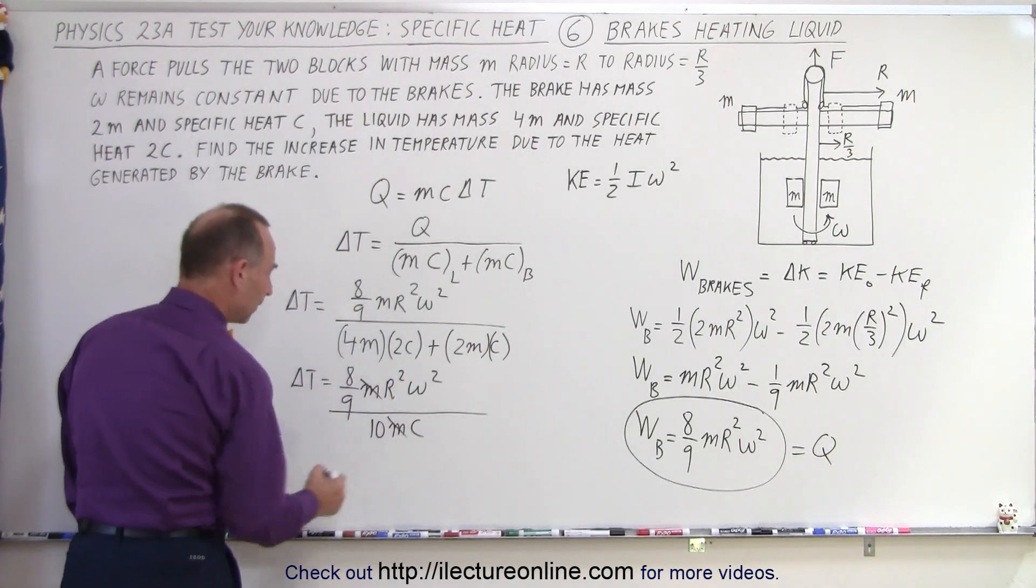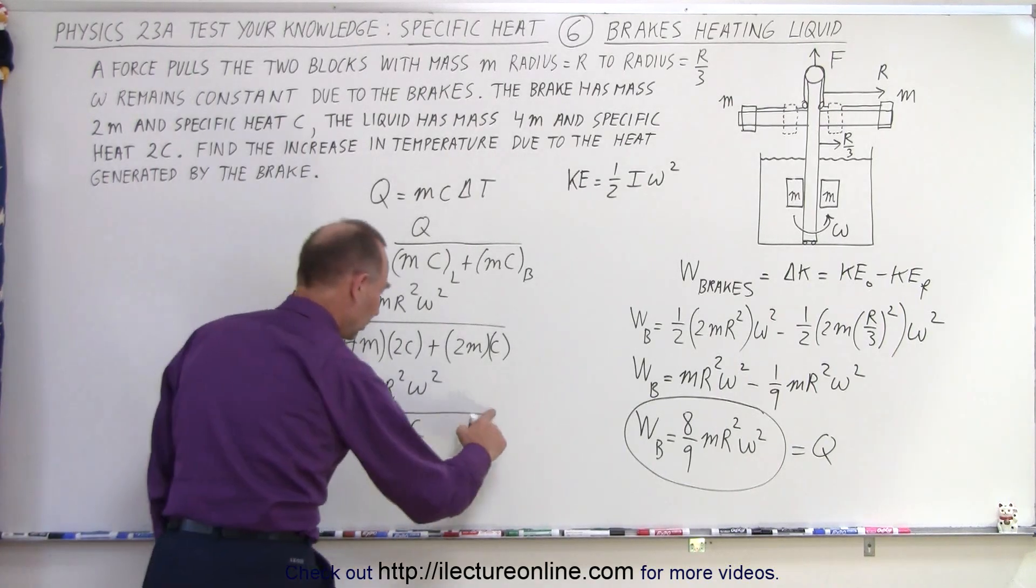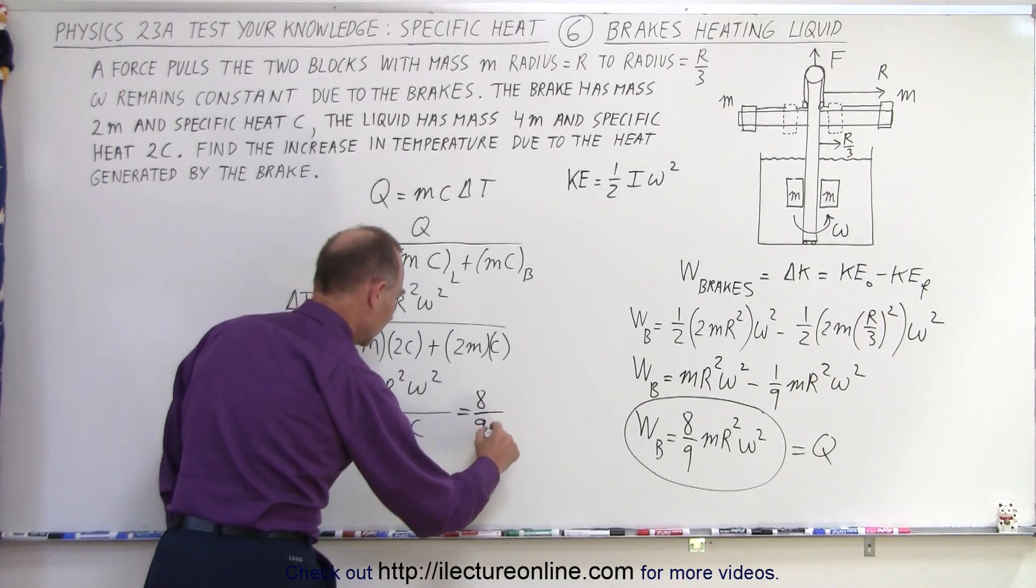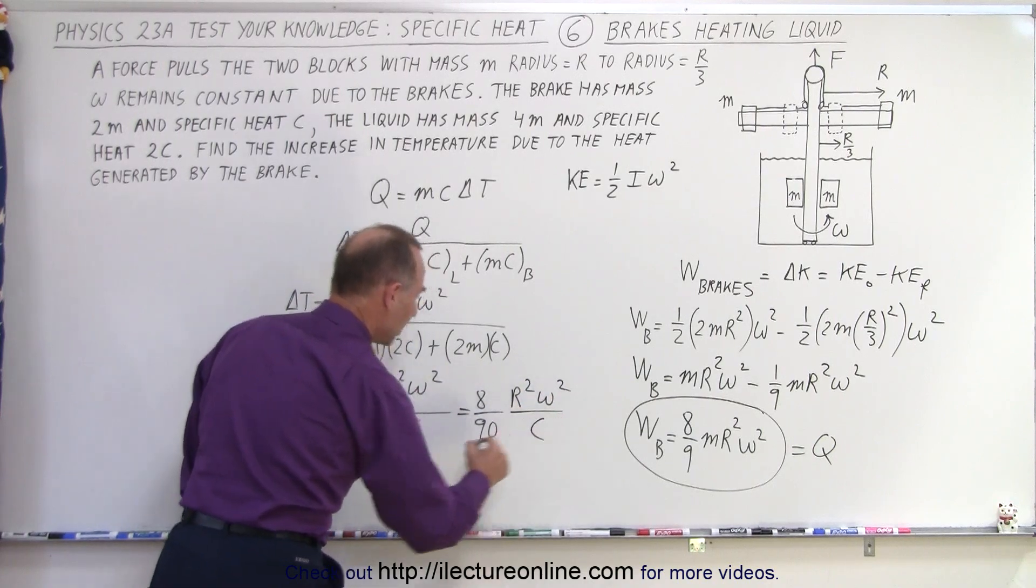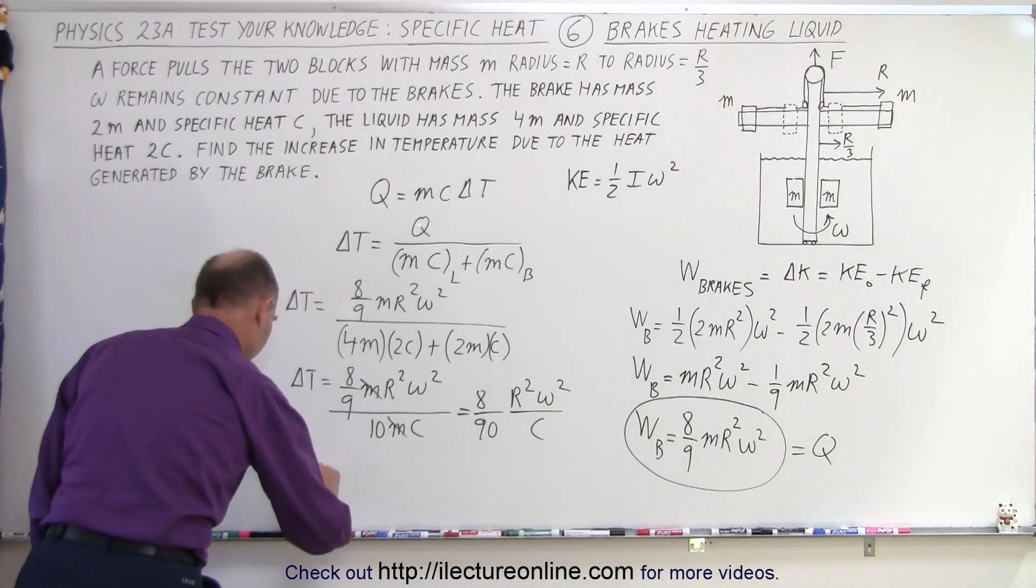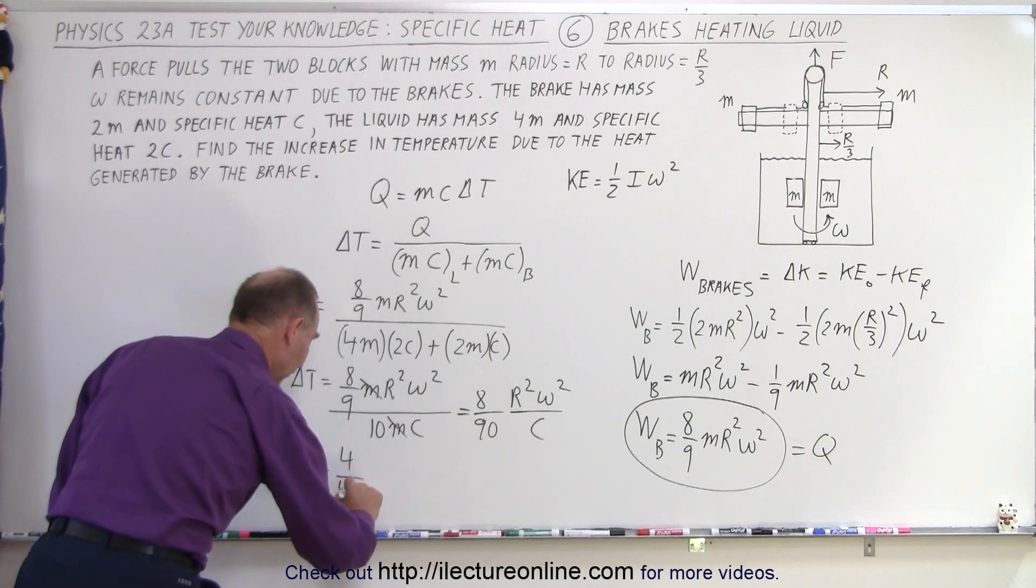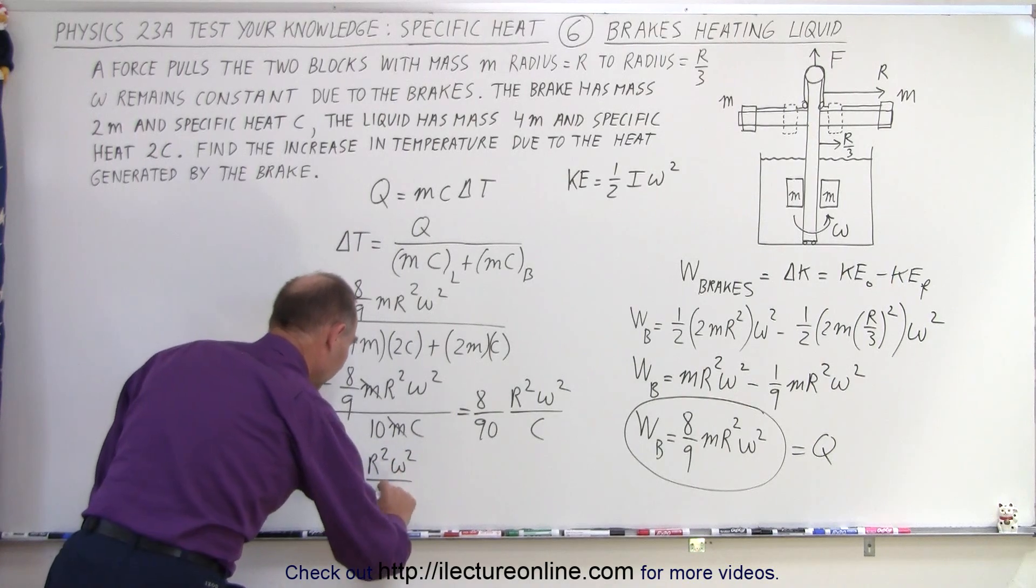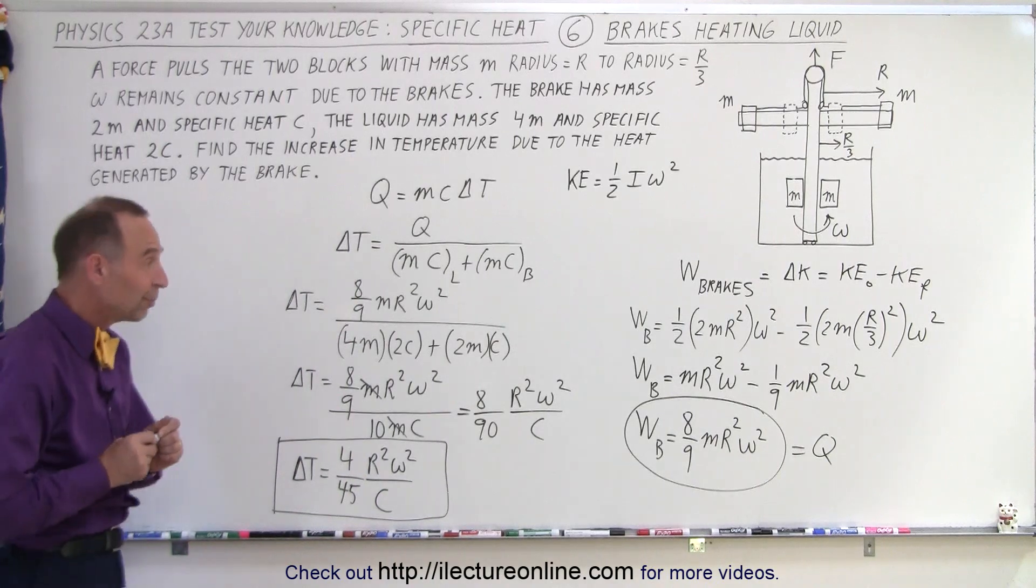Now the M's cancel out. 8 divided by 10, or I could say 80 over 90. So this would be equal to 8 over 90, R squared omega squared over C. And of course, we could divide both of those by 2, that gives 4 over 45. So delta T, the change in temperature, is equal to 4 divided by 45, R squared omega squared divided by C, the specific heat. And that would then be the change in temperature.